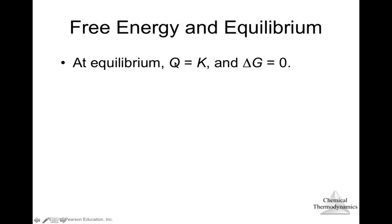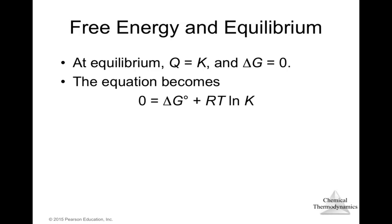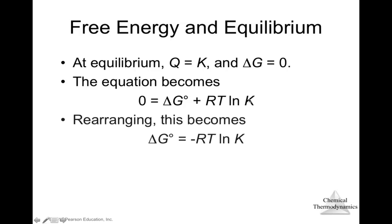At equilibrium, Q = K and ΔG = 0, so the equation becomes 0 = ΔG° + RT·ln(K). Rearranging gives ΔG° = −RT·ln(K). Taking the exponential of both sides: K = e^(−ΔG°/RT). This relates the equilibrium constant to the standard free energy change for the reaction.